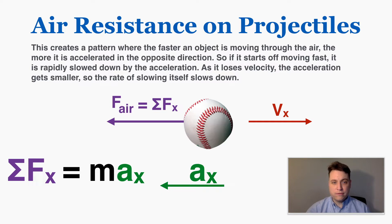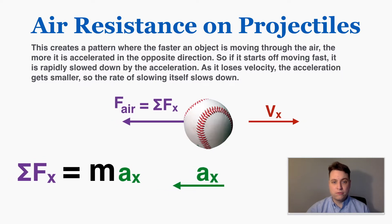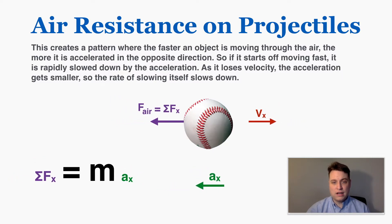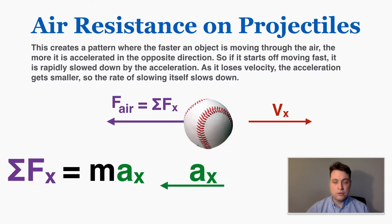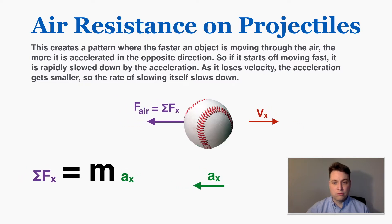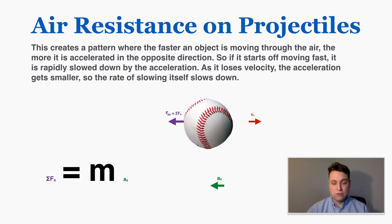So if an object starts off moving fast, it's rapidly slowed down because there's a lot of force of air resistance on it. But as it loses velocity, the air resistance also goes down, which means the force slowing the object is itself getting smaller, so it actually slows down at a lower and lower rate. It takes longer to slow down at a slower velocity — the rate of slowing itself slows down as you slow.